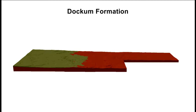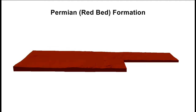The most productive unit of the Dockum Formation, which yields the most water, is called the Santa Rosa Formation, which consists of red to reddish-brown sandstone and conglomerate. The bottom layer of the model is the Permian, or Red Bed Formation, shown in red. This formation consists of low-permeability, bright red-colored sandstones and shales, and marks the base of the Greater High Plains aquifer system.